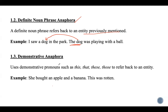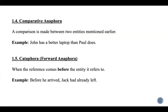Demonstrative anaphora uses demonstrative pronouns like this, that, these, and those to refer back to an entity. For example, in 'She bought an apple and a banana; this was rotten,' the machine should determine what 'this' refers to — whether it is the apple or the banana. Here, 'this' refers to banana.